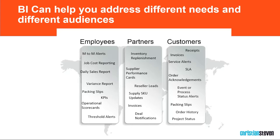BI can help you address different needs and different audiences. There are three primary groups that need BI: employees, partners, and customers. Starting with employees: at the management or board level, BI is used to make strategic decisions. At the operational level, BI is used to make better operational decisions, including re-engineering or improving business processes. At the individual level, BI provides insights and vital information for that role or function in the enterprise — often executive KPI scorecards, regional and individual sales reports, and such.